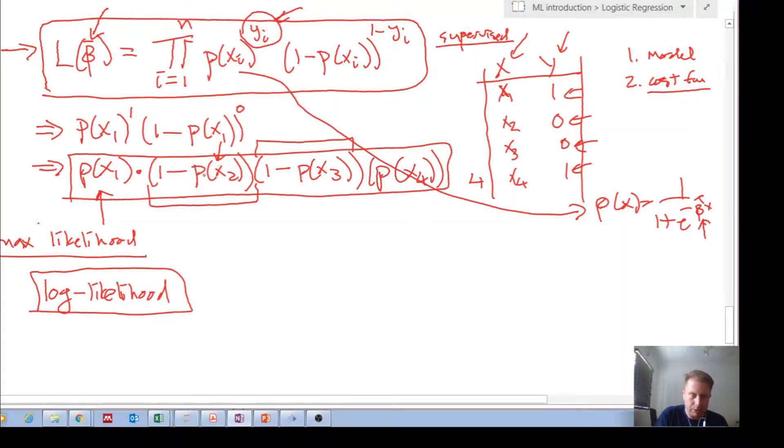Whereas if the actual output is zero, we want the probability of this example, this case, to be as close as possible to zero, which makes this thing as close as possible to one. I hope it's not too confusing, but the point is that what this likelihood function is doing is we want each of these terms to be as close as possible to one. We want to maximize the likelihood.